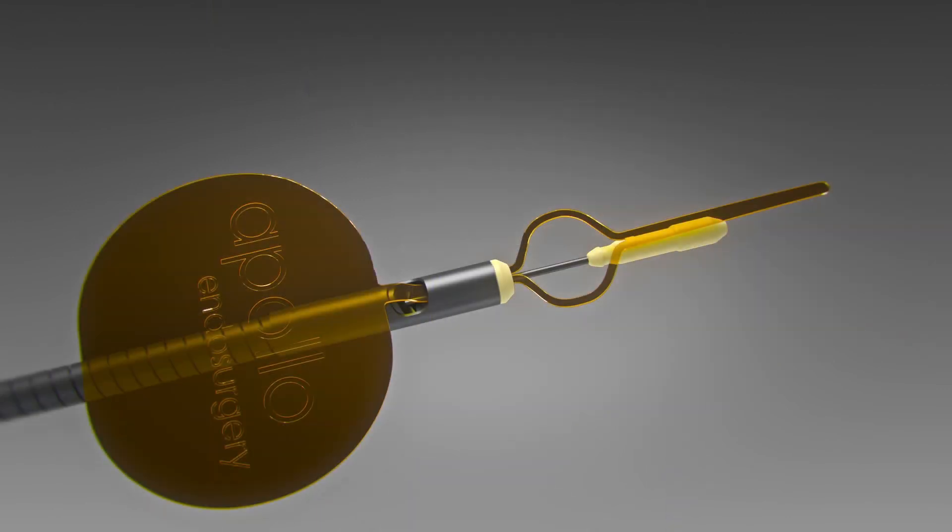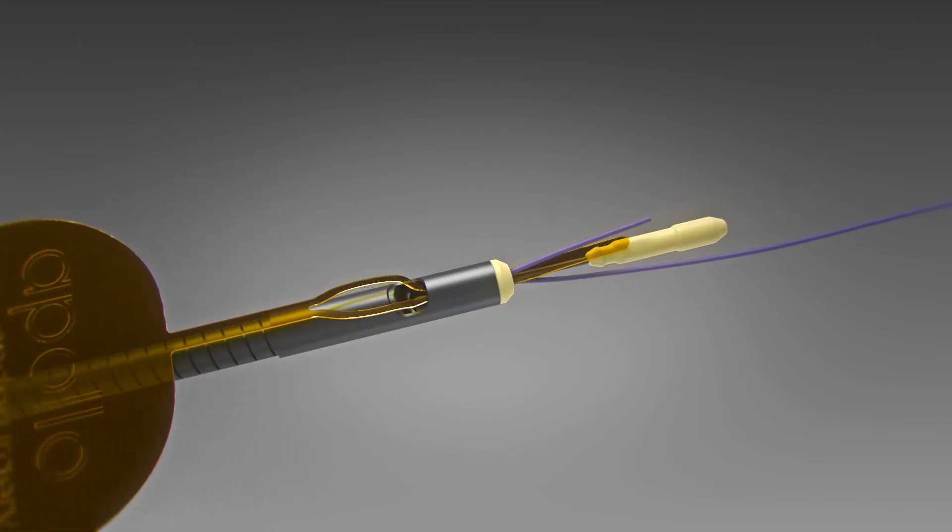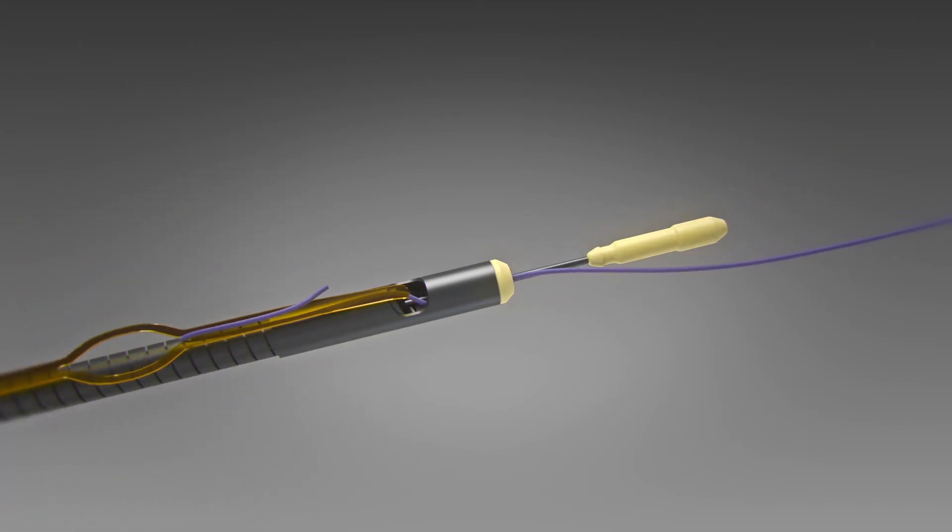To load the cinch, thread approximately 3 centimeters of the distal end of the suture through the gold suture loading loop. Pull the gold tab in line with the catheter until the suture has passed through the peak collar.